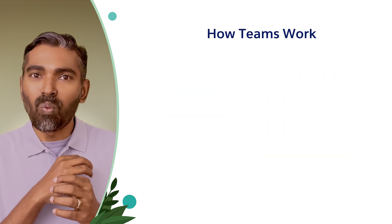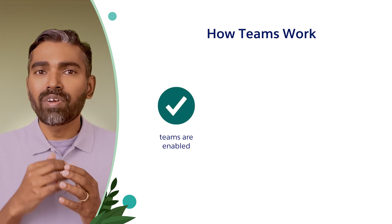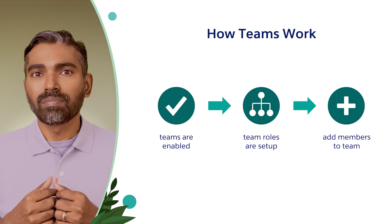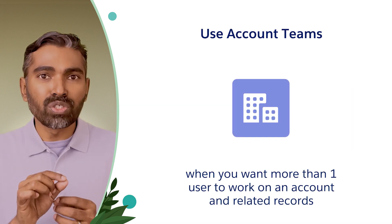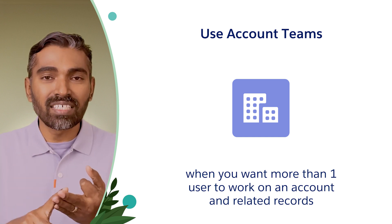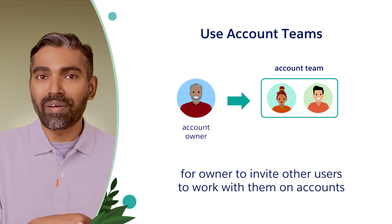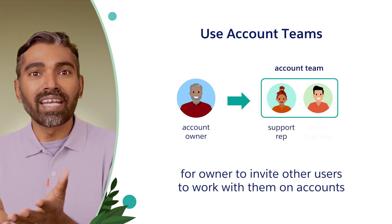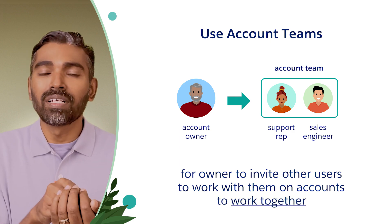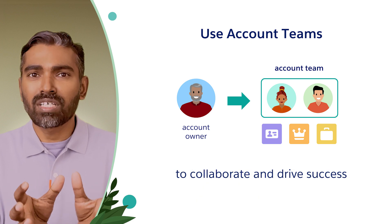Let's focus on how teams work across these three objects. Starting with the account object, we can enable account teams, and after the admin enables account teams and sets up the team roles, users can add members to the team. Why would I use account team? When you want more than one user to work on an account record and its related records such as contacts, opportunities, and cases, you can use Teams. I'm the owner, but I want you to work here with me on this particular account as a dedicated support rep or as a dedicated sales engineer — giving you access to this account and only this account, along with its contacts, opportunities, and cases, so we can all collaborate and be successful in managing that account.